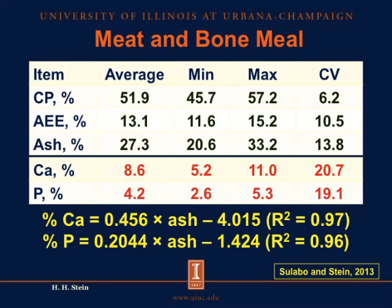Therefore, it is possible to predict the concentration of both calcium and phosphorus from the concentration of ash using one of two equations shown here. If we work with meat and bone meal, we can predict the concentration of calcium by multiplying ash by 0.456 and subtracting 4.015. Likewise, we can predict the concentration of phosphorus by multiplying ash by 0.2044 and subtracting 1.424. So again, ash is an important nutrient that can be used to predict the nutritional value of a feed ingredient.